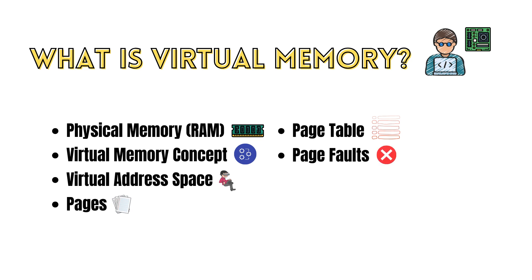If the required page is not in RAM, this is called a page fault. When a page fault occurs, the operating system swaps out a page from RAM to disk to make room for the needed page. The required page is then loaded from disk into the newly vacated space in RAM.